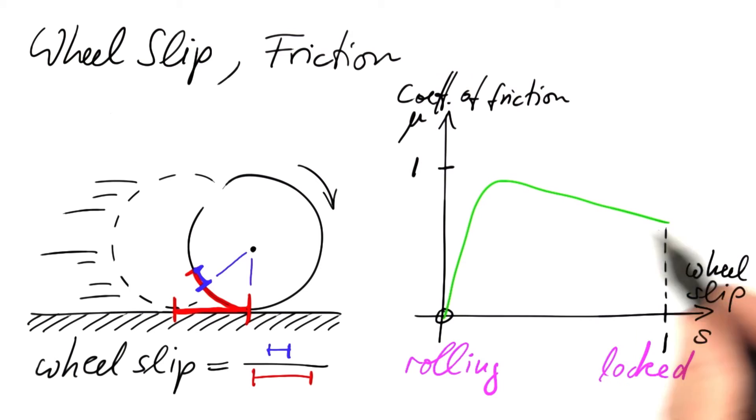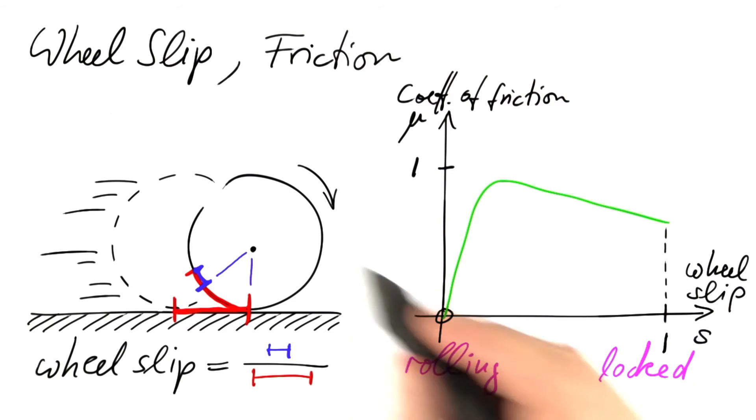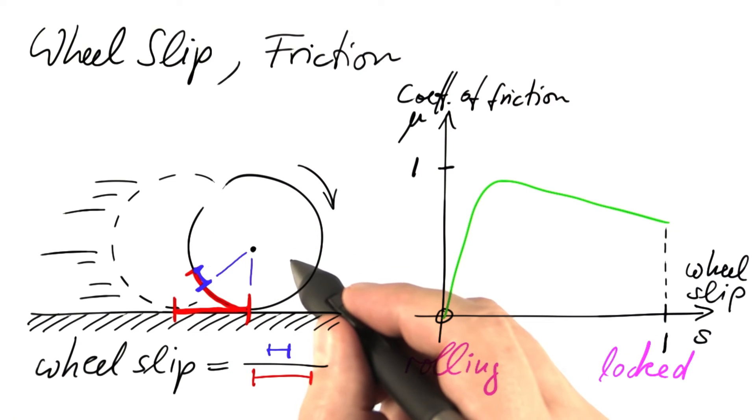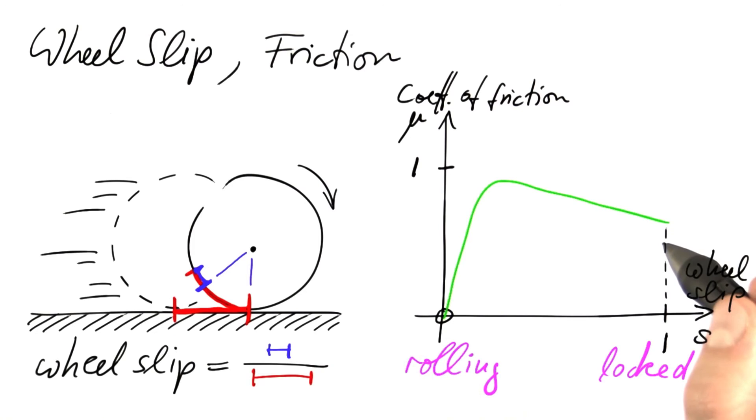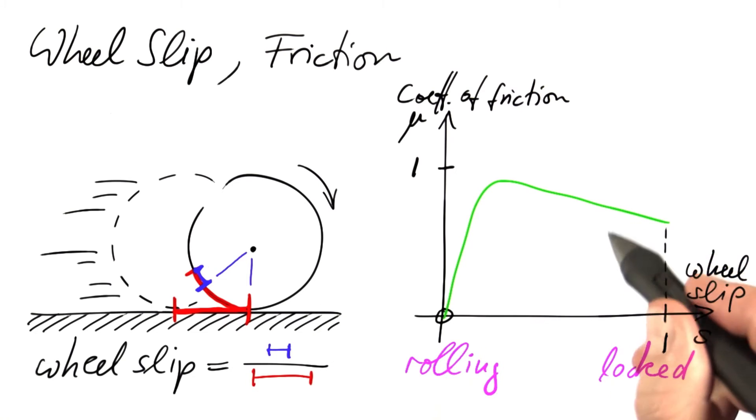Now one can study how friction depends on wheel slip. If the wheel slip equals one, the wheels are locked. They don't move with respect to the car. They slide on the street, which means that we are in the regime of kinetic friction.